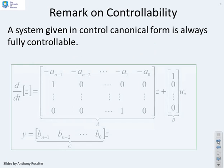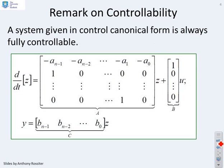Remark: a system given in control canonical form is always fully controllable. And we'll revisit this later.